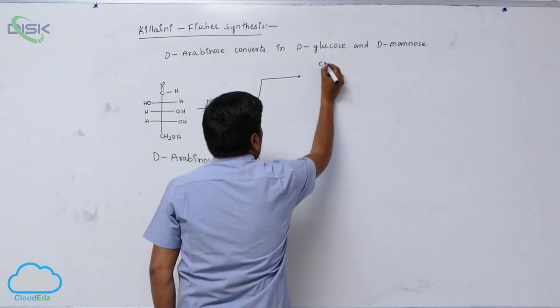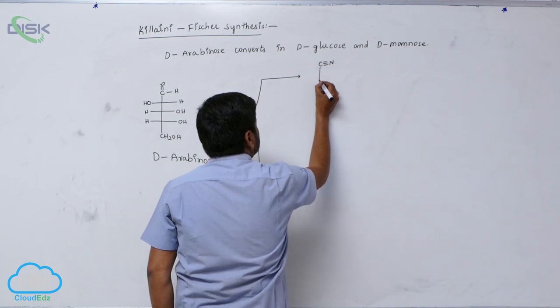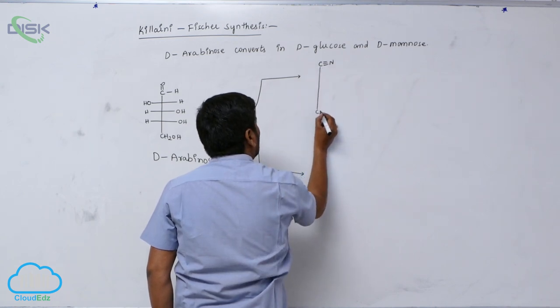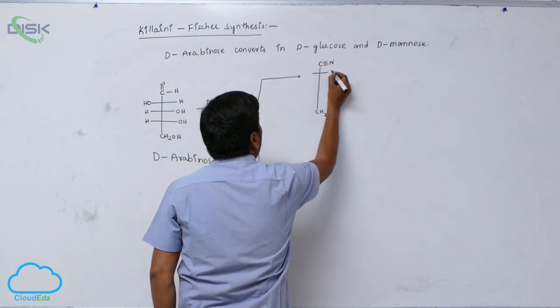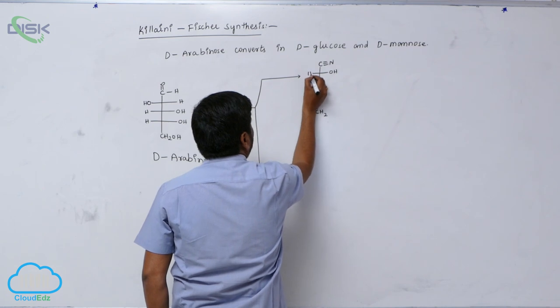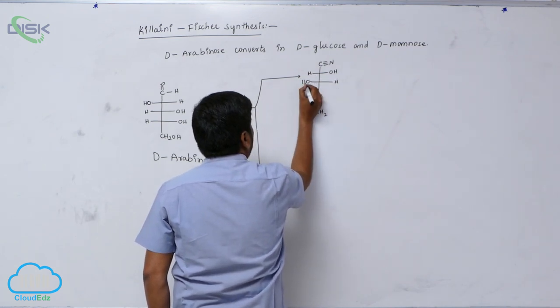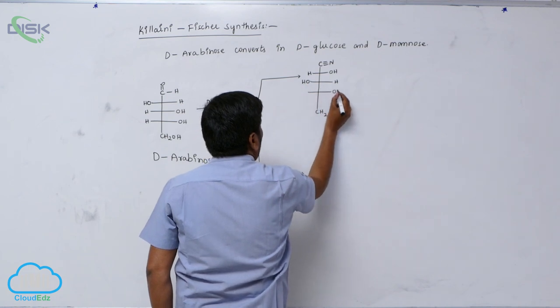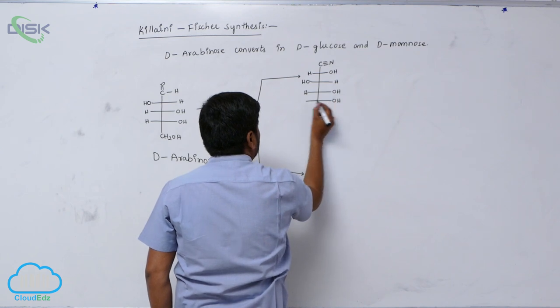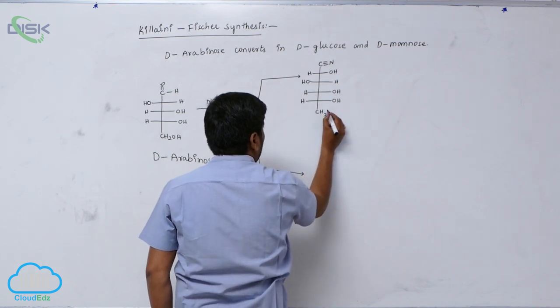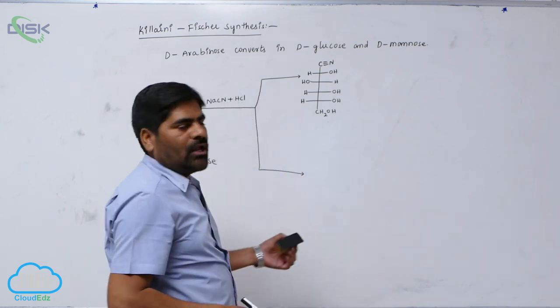Now here is C triple bond N. When carbon is increased, so OH hydrogen, hydrogen OH, OH, OH here is hydrogen, then CH2OH. This is known as Glucononitrile.